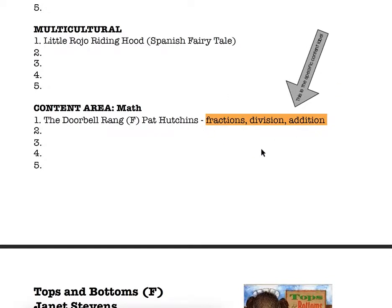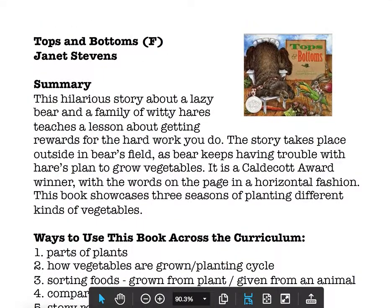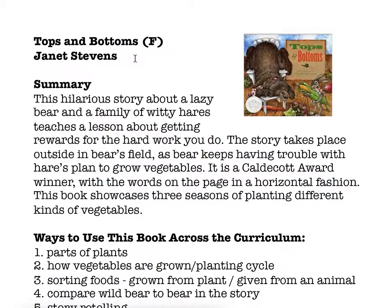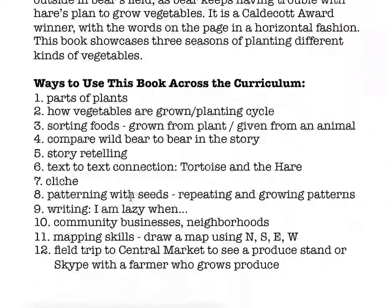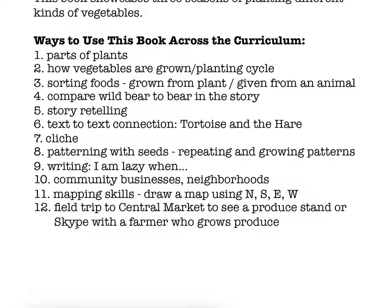When you look at that book list, you want to know how you could use that book for math and be able to identify that quickly. Moving on to Tops and Bottoms — this is my summary book, my one book from the book list, and it's a fiction book. I have a little picture included; if you can add a picture, that's always great so we get a visual. Because this is fiction, I wrote a summary of the story elements, and then listed twelve ways to use this across the curriculum. You only need ten, but I listed twelve as an example.